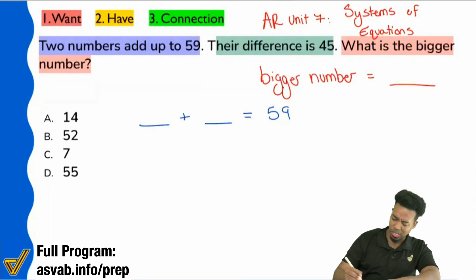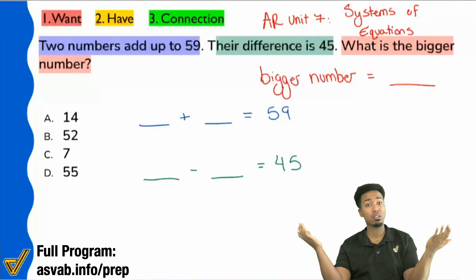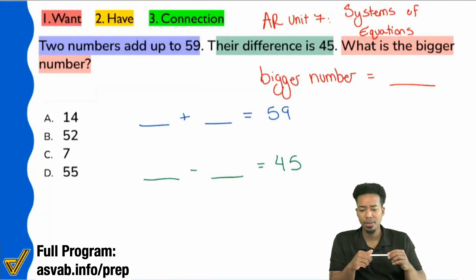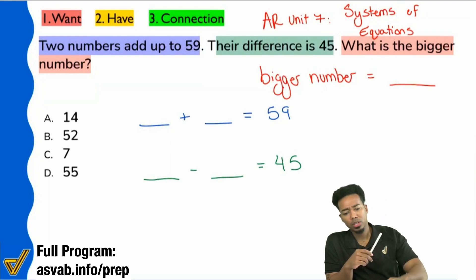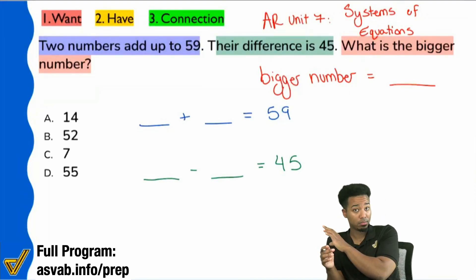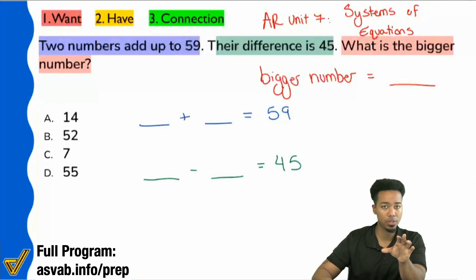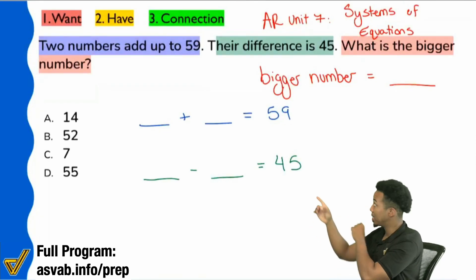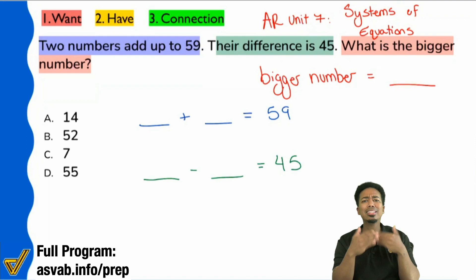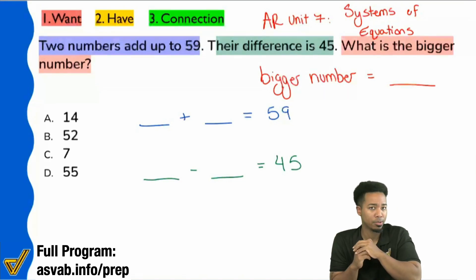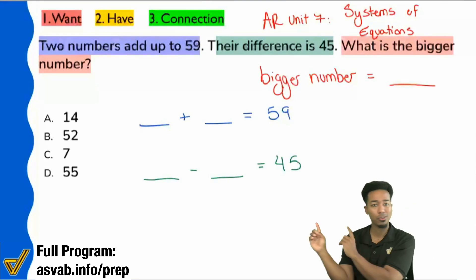So is it fair to say that in green, we could say that, you know, the bigger number minus the smaller number equals 45. Is that fair? Okay, so if we have this understanding, and I'm going to ask you straight up, even if you were confused about this problem, did those parts make sense? Did it make sense in the first sentence that two numbers add up to 59? And did it also make sense that subtracting those same two numbers, you get 45? Did that part make sense to you?